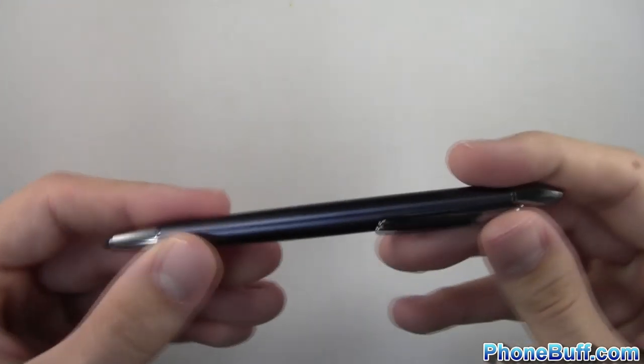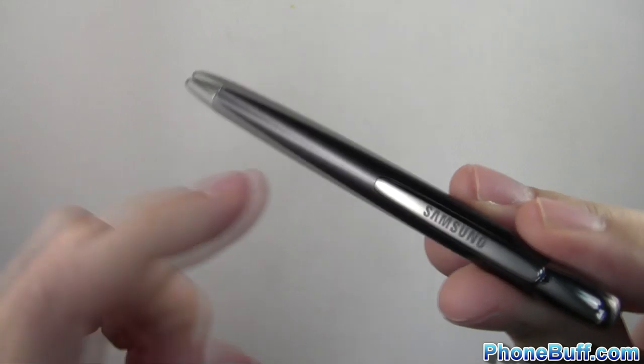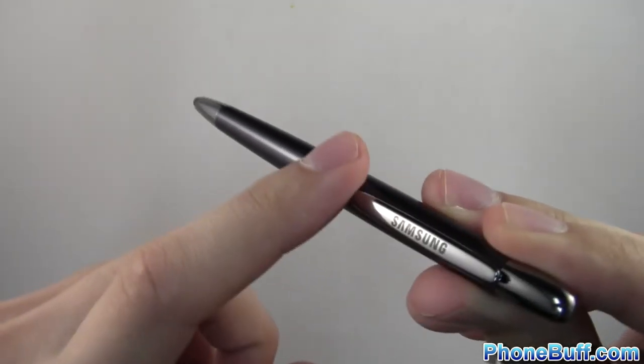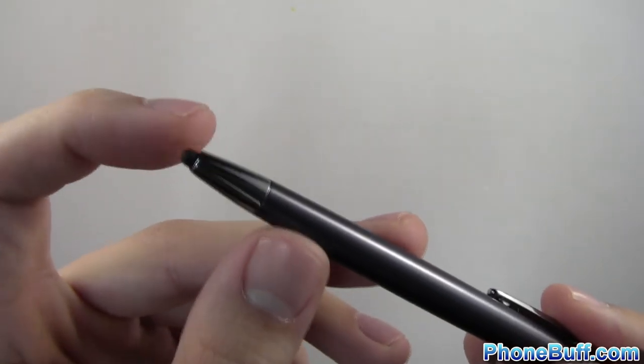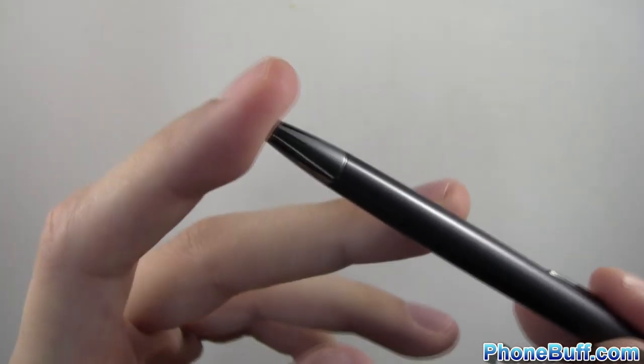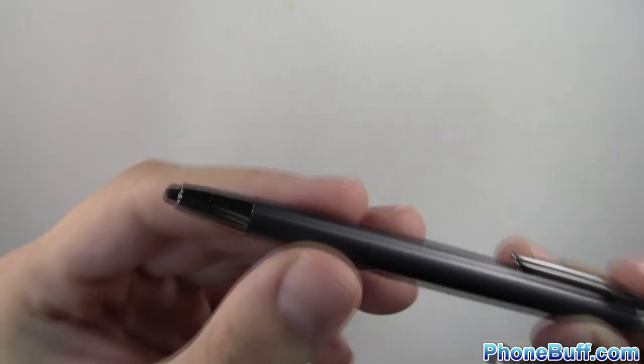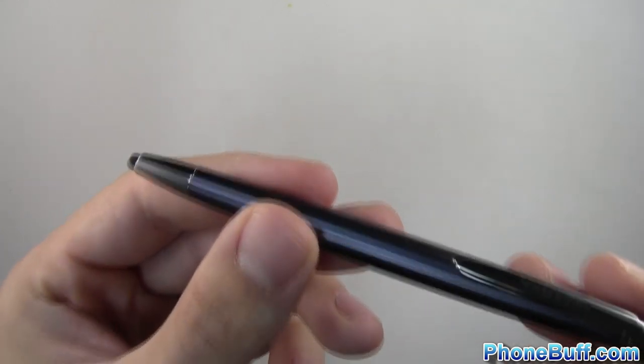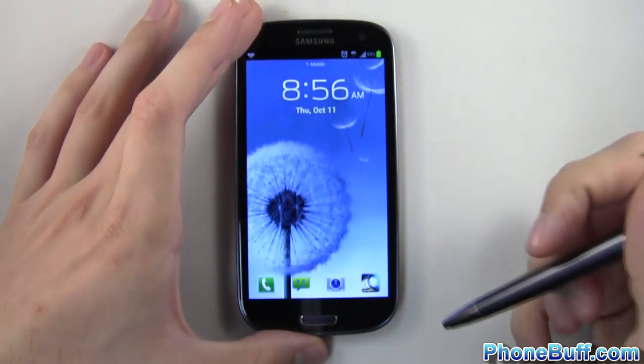But first I want to show you the pen itself. At first glance you can see it looks just like your ordinary pen. Of course we have the Samsung logo here on the little clip and at the tip, of course we don't have ink, we have a capacitive stylus. And unlike your ordinary capacitive stylus, it's not fat and squishy. It's actually rather thin and hard so I can't really squish this guy in. So it's definitely going to give you more precise input than your typical capacitive stylus. So let's go ahead and test it on the Galaxy S3.